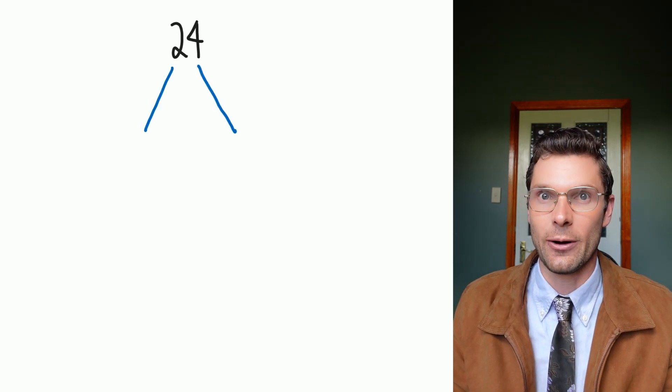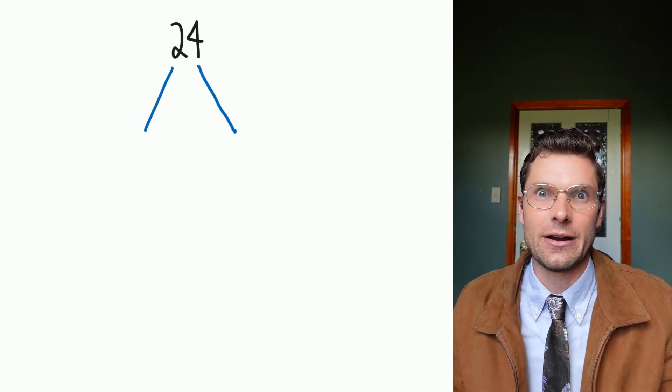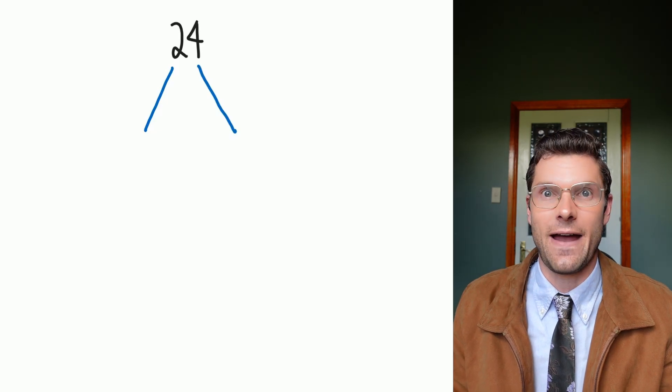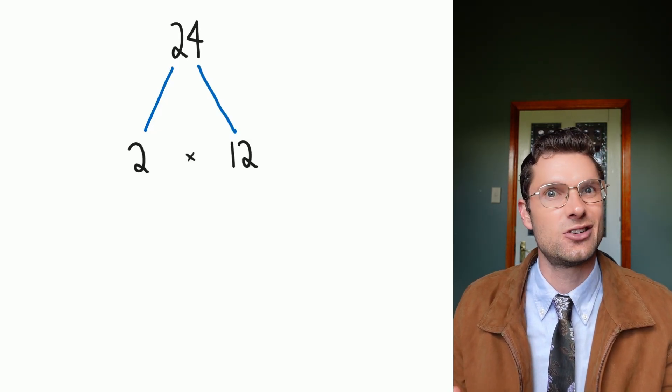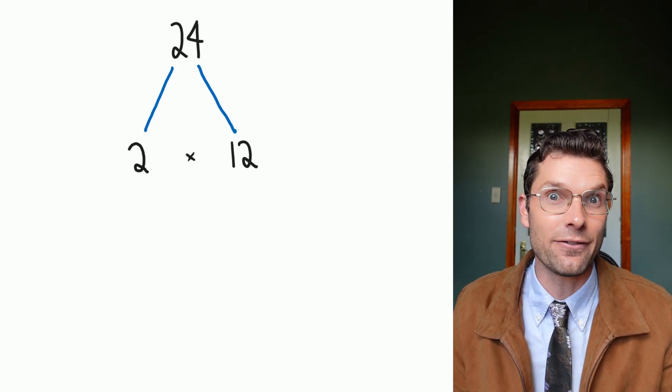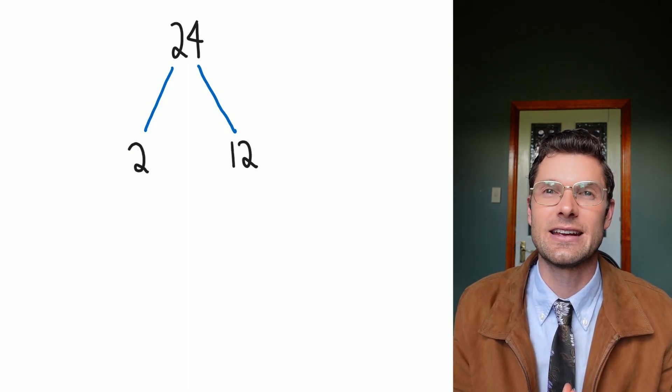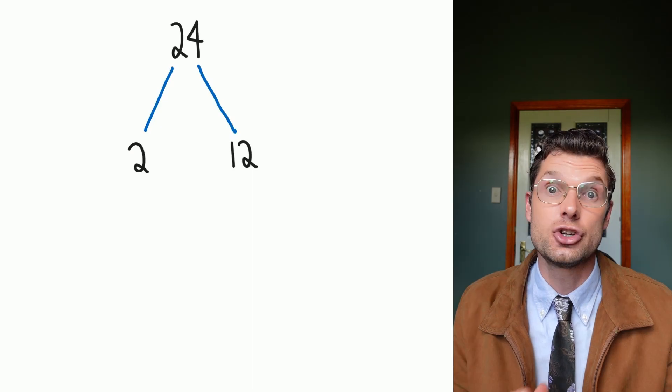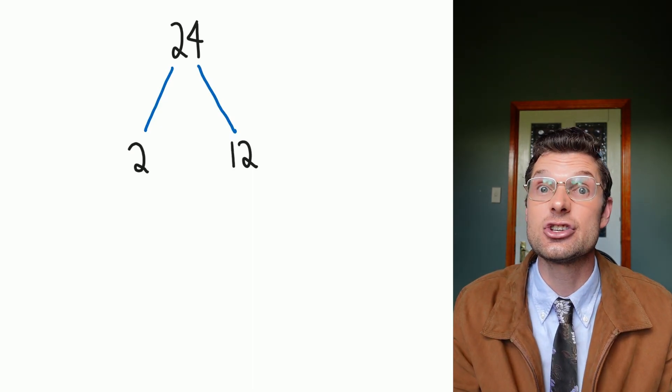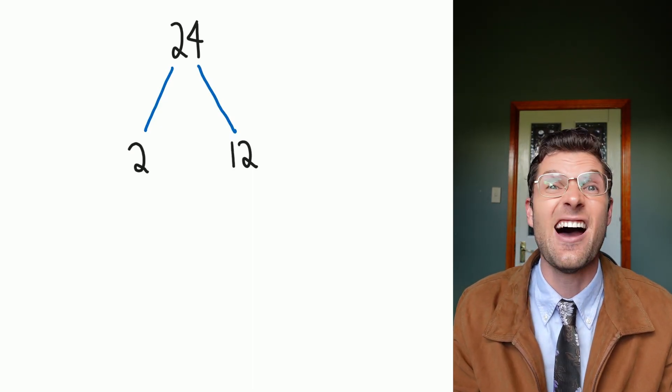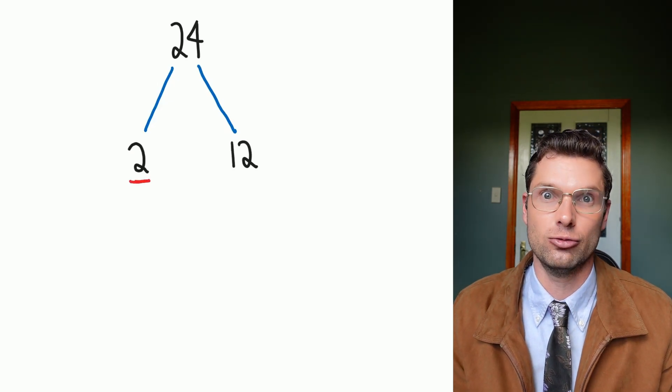So what I'm going to do is under that 24 is draw two branches. That's why it's called a factor tree. All I've got to do here is write a factor pair. So I'm going to write 2 times 12. You don't actually have to write that times in, but the 2 and 12 are saying that these two numbers multiplied together give the number up top. 2 is a prime factor, so we're going to stop this branch right here. I actually like to underline it with a little red pen.